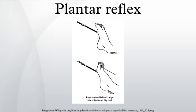The plantar reflex is a reflex elicited when the sole of the foot is stimulated with a blunt instrument. The reflex can take one of two forms. In normal adults the plantar reflex causes a downward response of the hallux. An upward response of the hallux is known as Koch sign, Babinski response or Babinski sign, named after the neurologist Joseph Babinski. The presence of the Babinski sign can identify disease of the spinal cord and brain in adults, and also exists as a primitive reflex in infants.